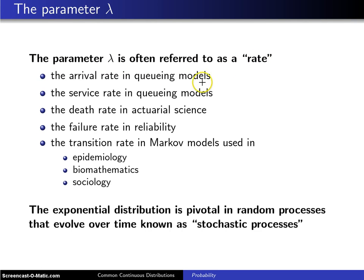In a queueing model, for example, lambda might represent the arrival rate. Likewise, in a queueing model, customers not only arrive to the queue but also get serviced, so lambda might refer to the service rate if service times are exponentially distributed.